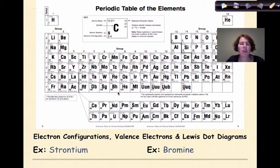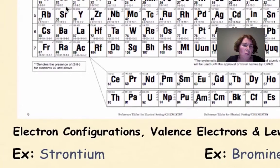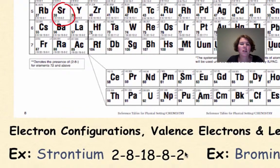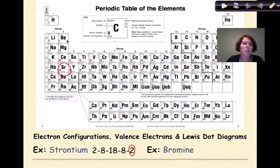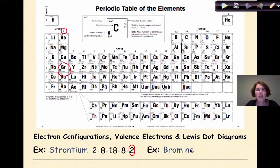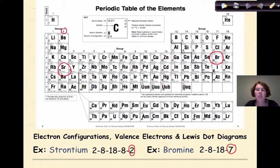Your periodic table gives you all sorts of different types of electron configurations. An example: strontium has an electron configuration of 2, 8, 18, 8, 2. That last number is the number of valence electrons. All elements in this group end with 2, and they are in group 2. Bromine has an electron configuration of 2, 8, 18, 7 — it has 7 valence electrons and is in group 17. All elements in group 17 will end with the number 7.